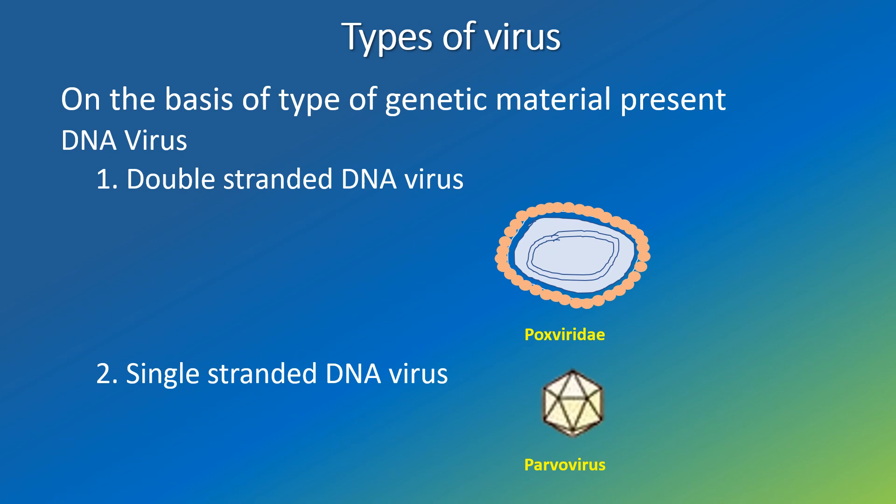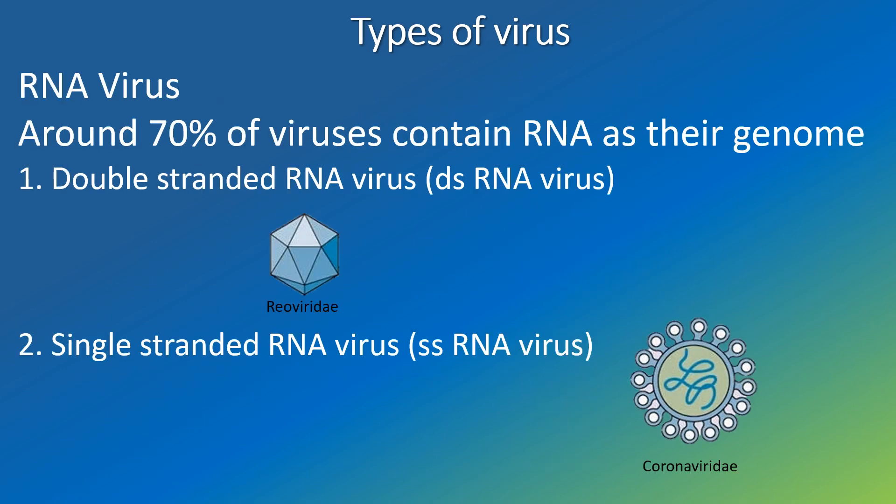On the basis of type of genetic material present in the virus, the virus is of two types: DNA virus and RNA virus. DNA virus is again subdivided into two groups: double-stranded DNA virus and single-stranded DNA virus. Example of double-stranded DNA virus is poxviridae; example of single-stranded DNA virus is parvovirus. Around 70% of viruses contain RNA as their genome. Double-stranded RNA virus — example is reoviridae. Single-stranded RNA virus — example is coronaviridae.